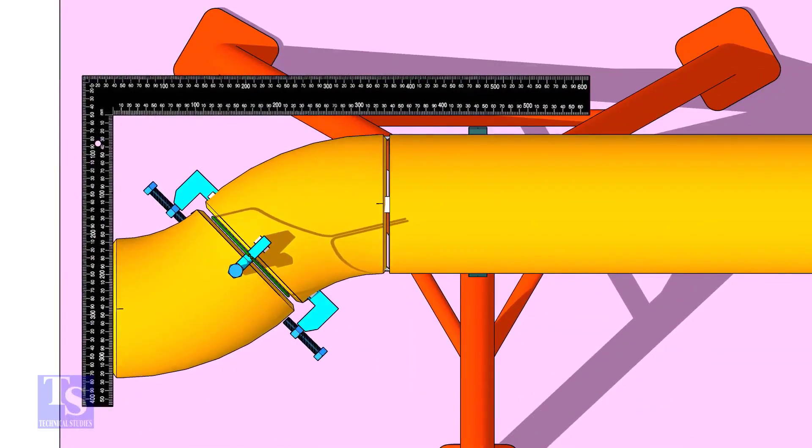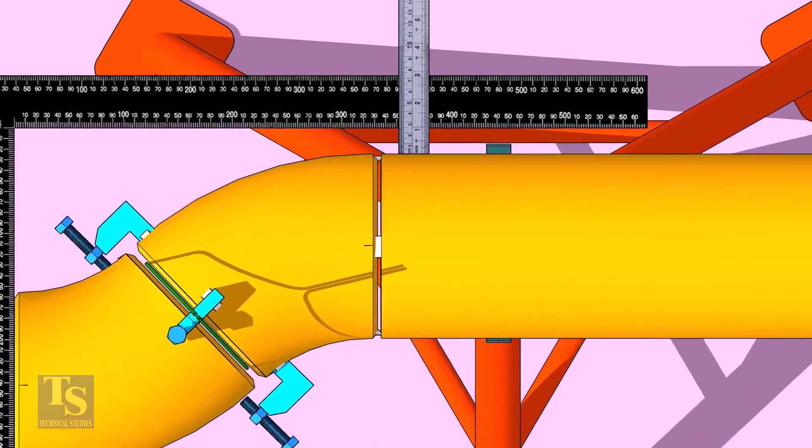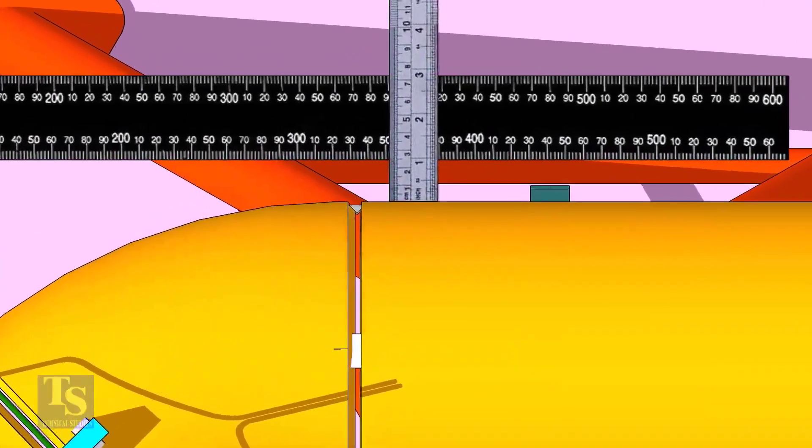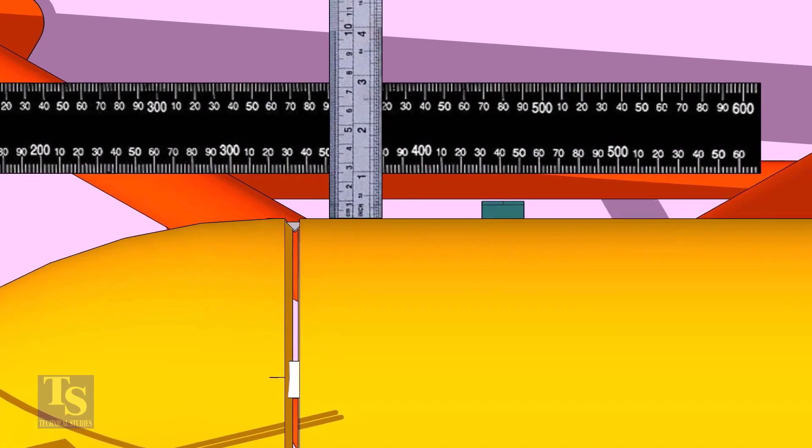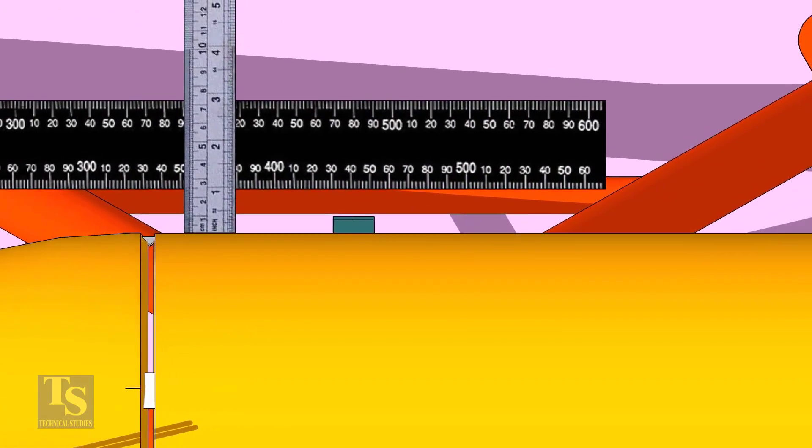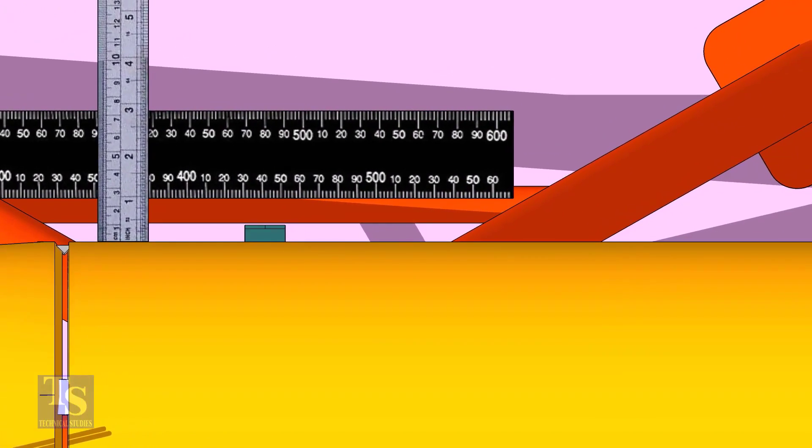Put a large right angle on the face of the elbow as shown and check the distance between the pipe and the right angle. If both the measurements are the same, tack weld on the top and bottom side of the joint.